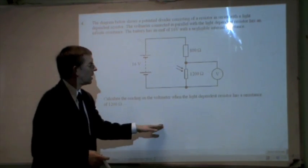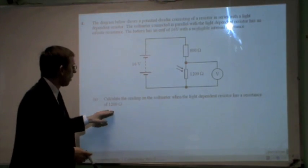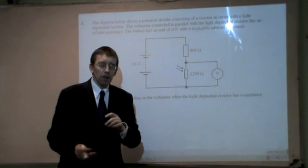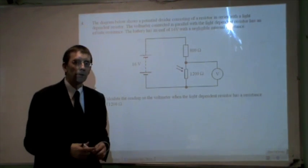Calculate the reading on the voltmeter when the light dependent resistor has a resistance of 1200 ohms. So I'm going to tackle this in two ways. The first way, I'm going to use the potential divider formula.